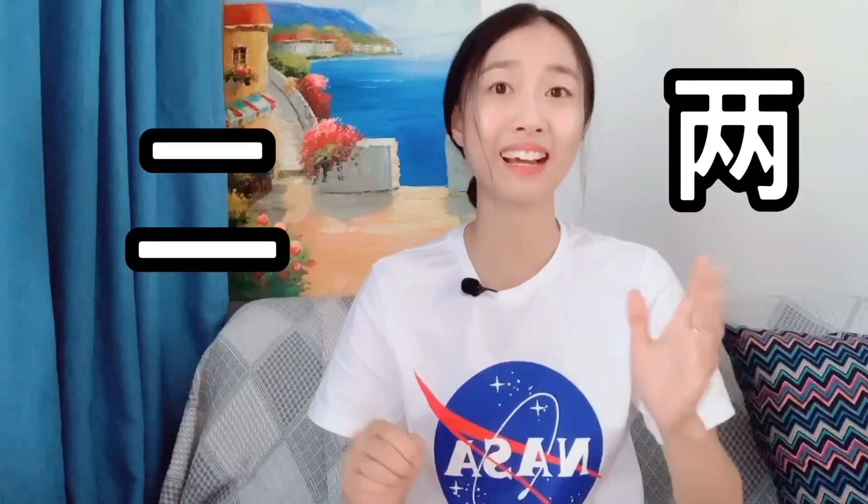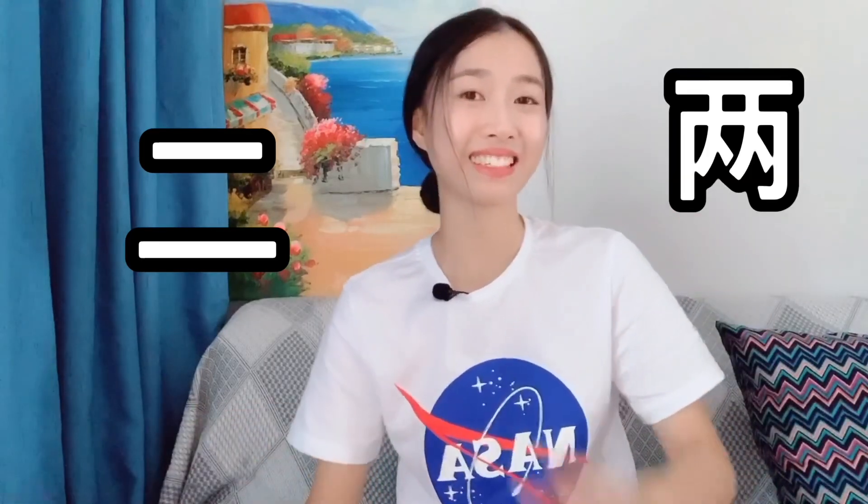Alright, now let's move into today's lesson. Today we will learn numbers. We will learn to show numbers with one hand, one to ten. And then we will learn the differences between two twos: 二 and 两. Now let's move into it — let's learn to count with Chinese hand gestures.